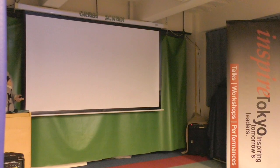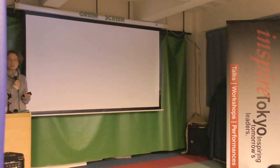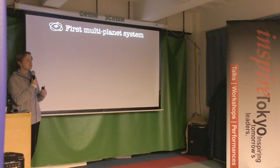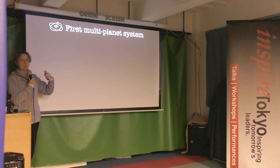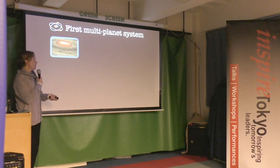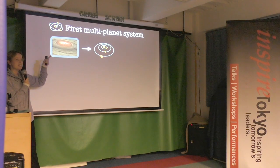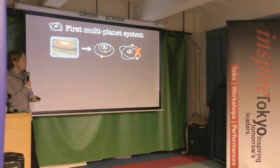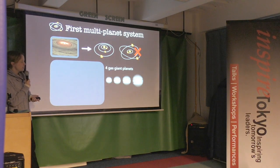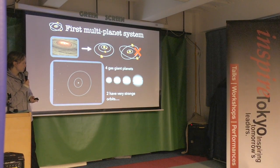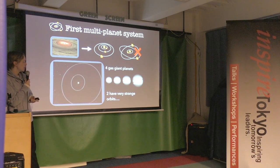This was also the first multi-planet system discovered — the first star found to be orbited by more than one planet. With a protoplanetary disk we expect planets to form in a plane, so we don't expect wild orbits at all angles. However, the Epsilon Andromedae system is orbited by four gas giant planets — a little like our own but bigger — and two of these had very strange orbits, as shown in this simulation.